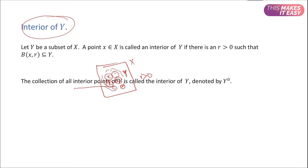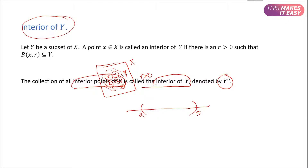The collection of all interior points of Y is called the interior of Y, denoted by Y⁰. Taking the same example: the set Y is all points between 2 and 5 excluding 2 and 5. The interior Y⁰ is also all the points between 2 and 5, because 5 is not an interior point — taking a ball around 5 would go outside Y.